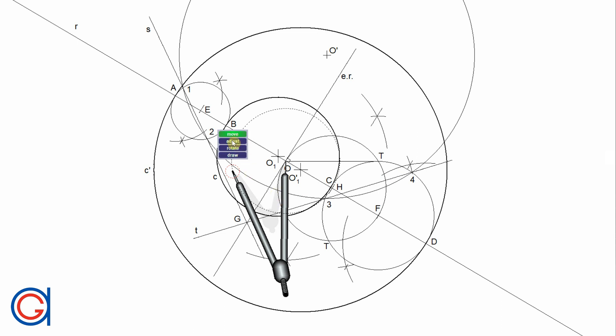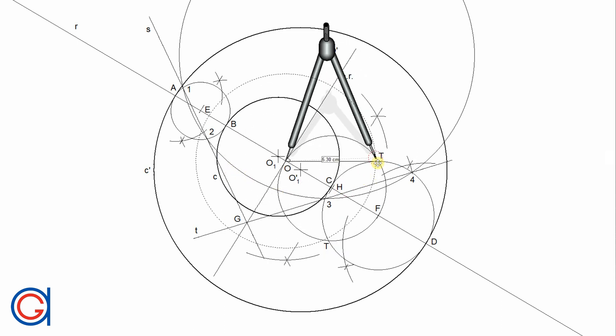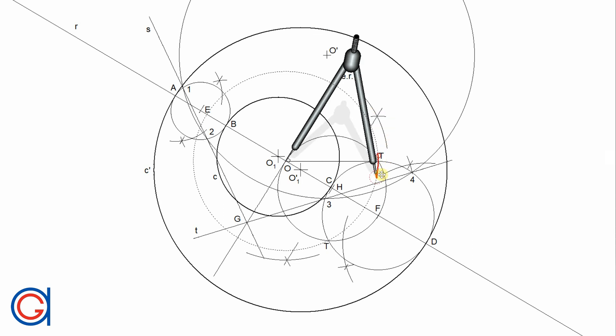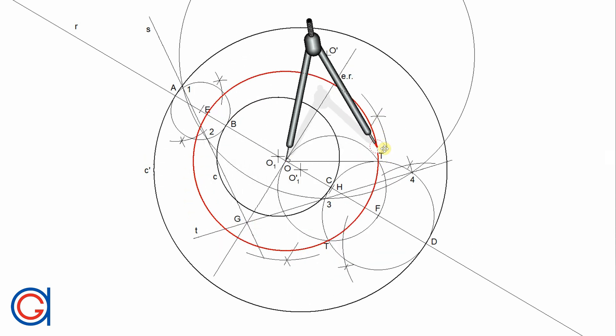OT is going to be the radius of the mid-circle. So the final step is setting the compass on center point O with radius OT, and we draw the mid-circle that we are looking for, as can be seen here on the screen highlighted in red.